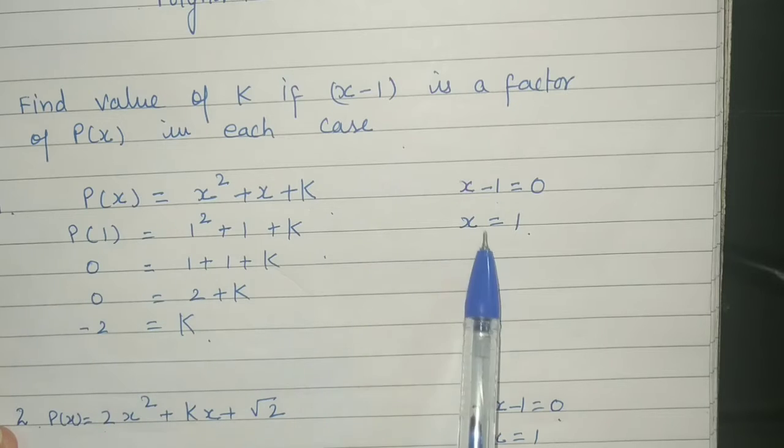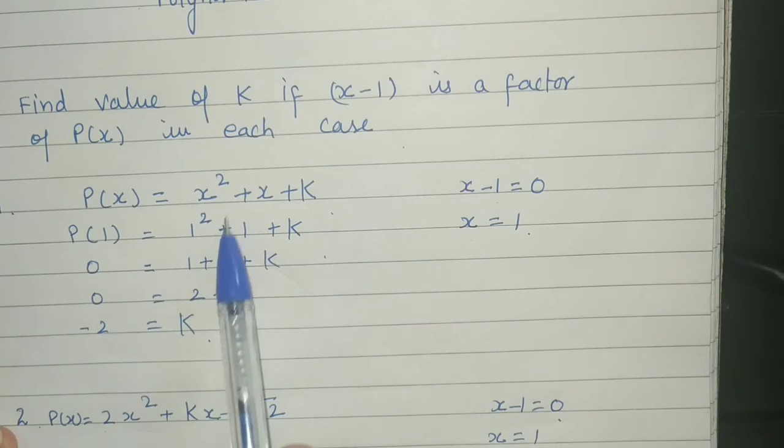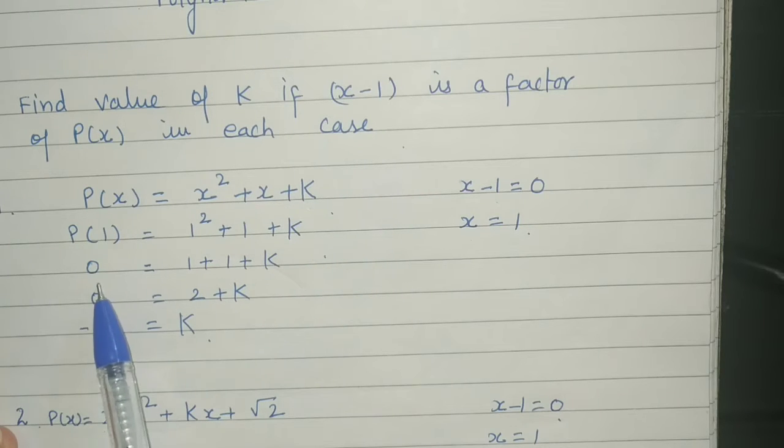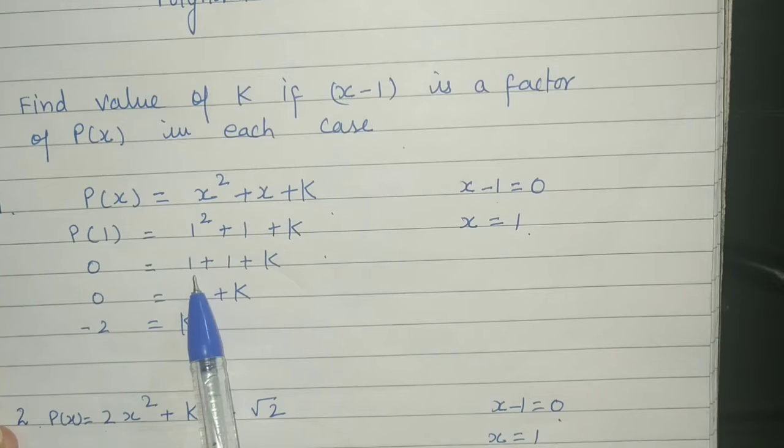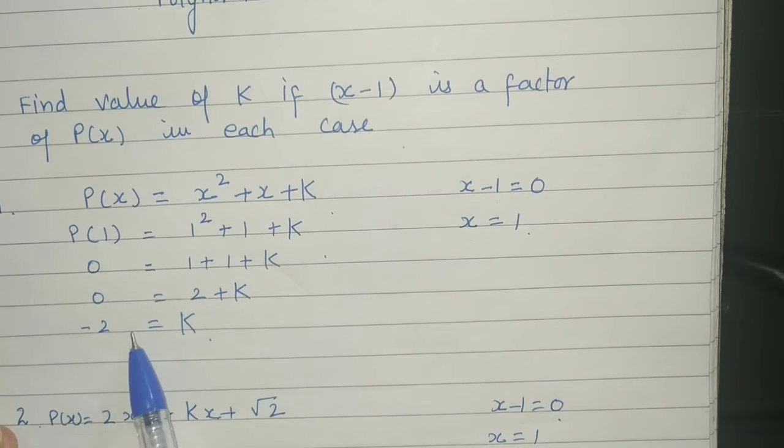So we are going to put the value of x. P of 1 equals 1 squared plus 1 plus k. By putting this value, polynomial is equal to 0. 1 plus 1 plus k equals 0. So we get k is equal to minus 2. By using this method, we can find the value of k.